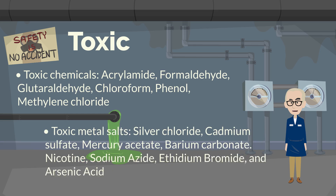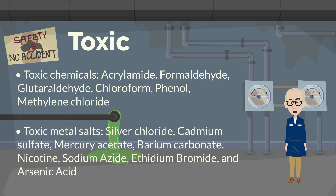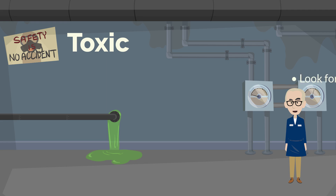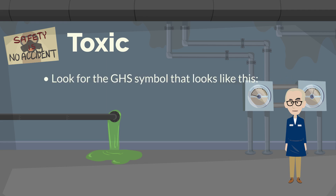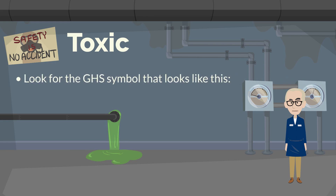Toxic metal salts include silver chloride, cadmium sulfate, mercury acetate, and others. Look for the GHS symbol that looks like this.